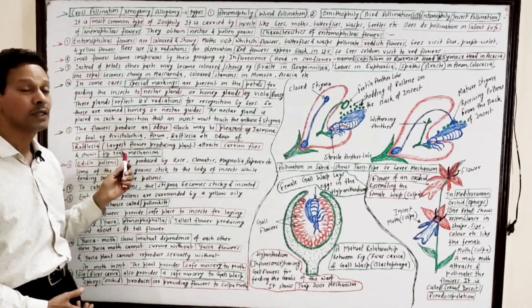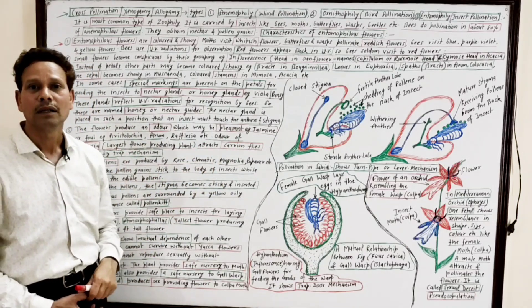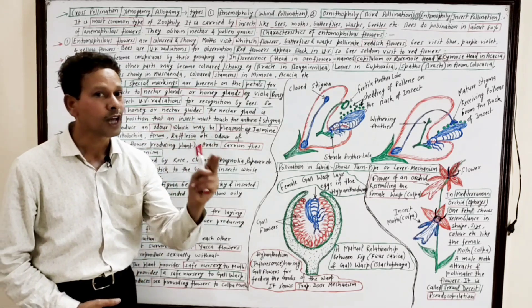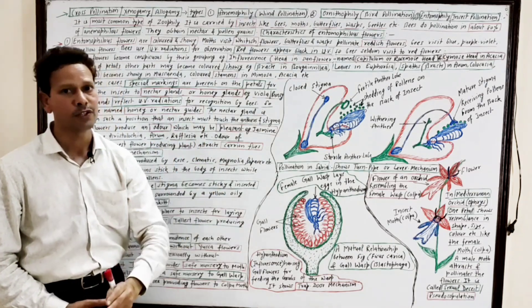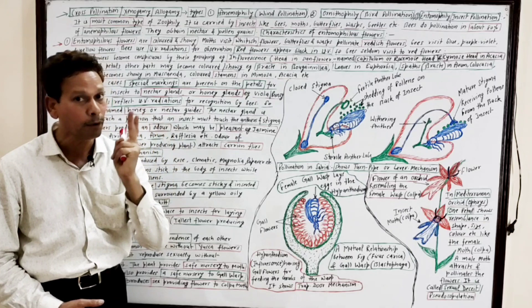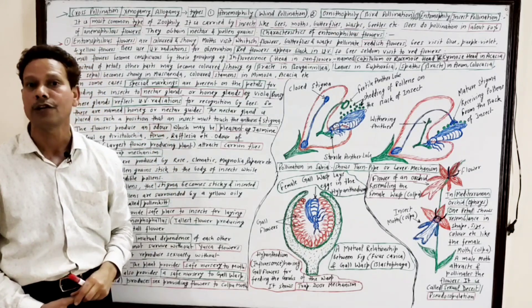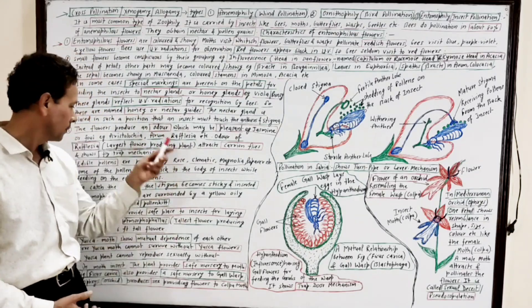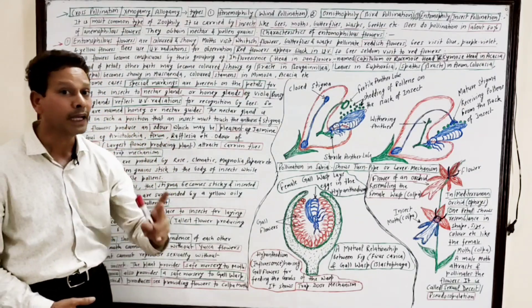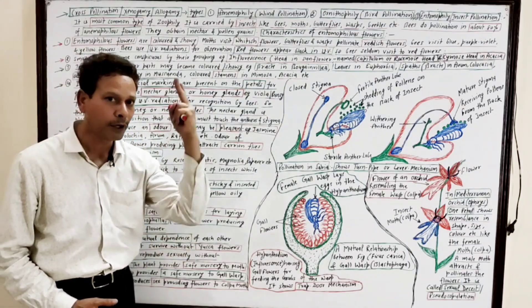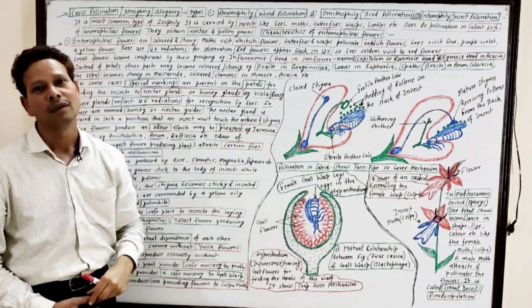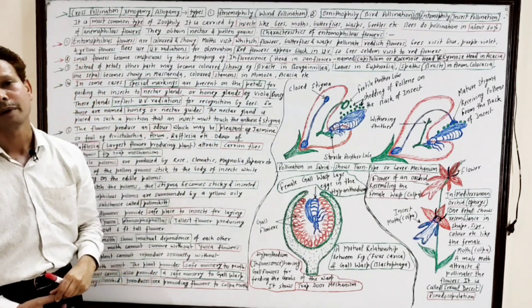Rafflesia, the largest flower-producing plant, shows a fly-trap mechanism by producing a foul smell to attract carrion flies.